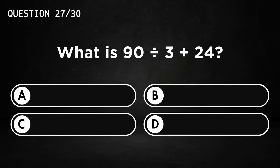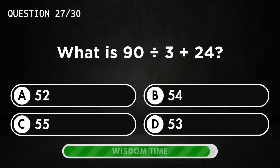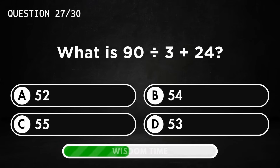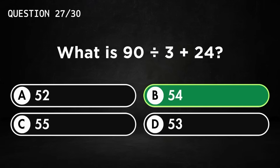What is 90 divided by 3 plus 24? Answer B, 54.